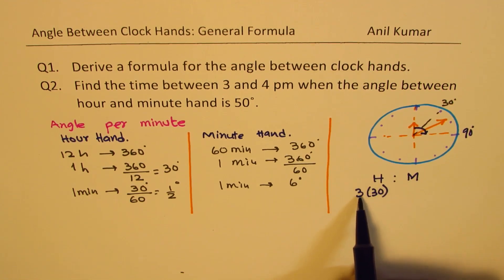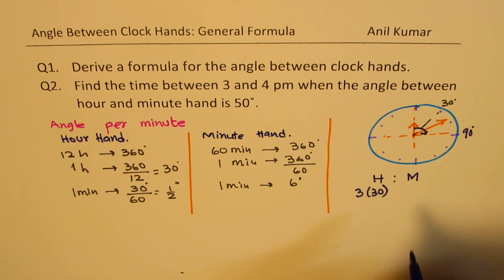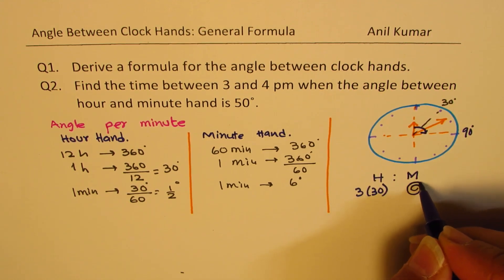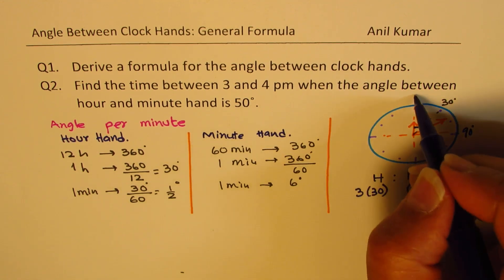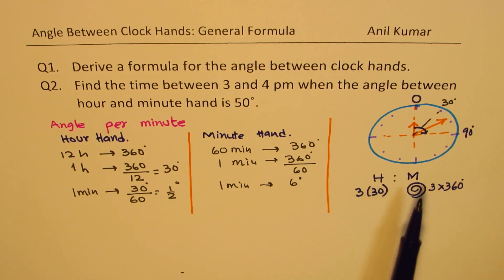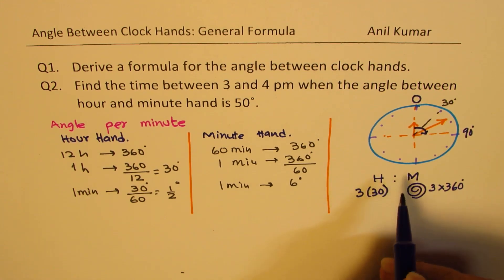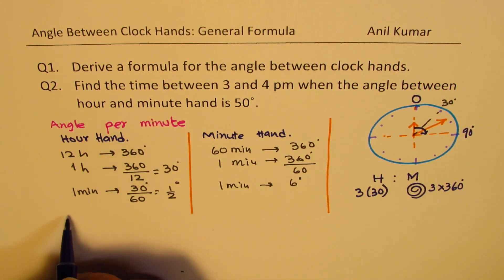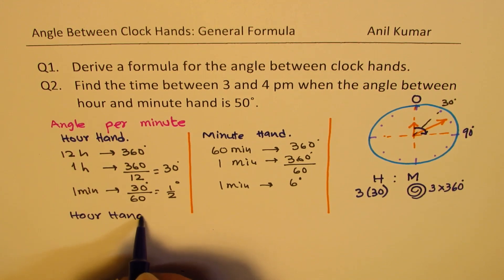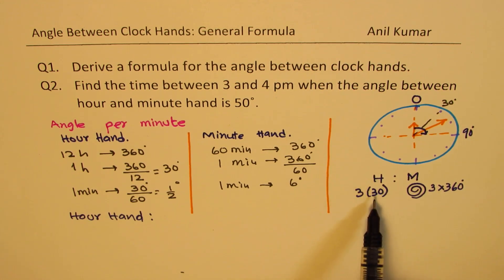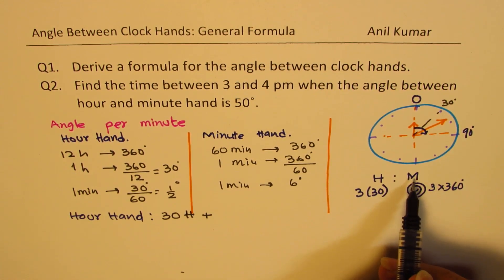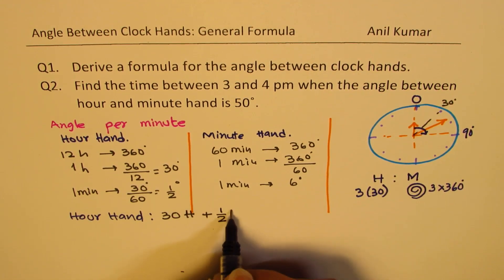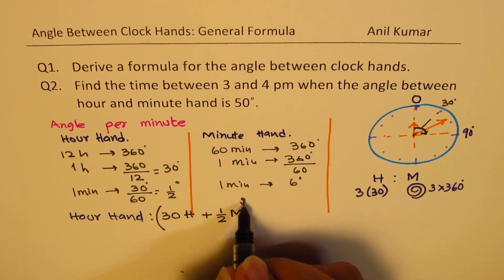In general, if we have time in H hours and M minutes, the hour hand moves 30 times the number of hours H, plus half a degree for every minute, so it is 30H plus M over 2. That is the movement of the hour hand.